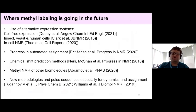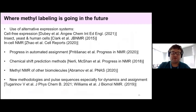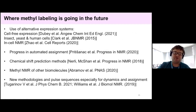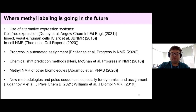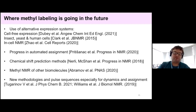Where is methyl labeling going in the future? To date, pretty much everything is done in E. coli, but many proteins don't express well there, so people are working on alternative expression systems — cell-free expression, insect cell, yeast, and human cells — and moving toward in-cell NMR. I also think there will be progress in automated assignment as new NMR experiments are implemented, new chemical shift prediction methods going from X-ray to methyl chemical shifts or vice versa, and methyl NMR of other biomolecules. A recent paper by Lewis Kay's group methylated nucleic acids and did NMR in complex with a nucleosome, which is super cool. New methodologies and pulse sequences are being developed all the time.